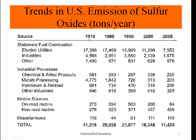Here are the trends in US sulfur oxide emissions in tons per year from 1970 to 2008. For stationary fuel combustion, emissions were reduced from more than 17,000 tons per year down to about 7,500 tons per year — less than 50% of the original. For industrial processes such as chemical and light products, metal processing, petroleum refining, and other industries, emissions were reduced from around 600 down to about 250 tons per year.